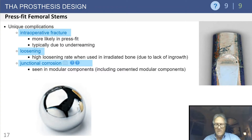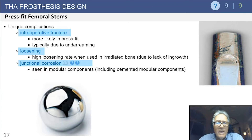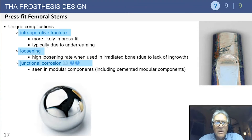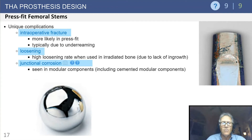Unique complications of press-fit femoral stems include intraoperative fracture — you have to be a good carpenter, looking carefully at the femoral canal. Our rule was: if you're driving the stem and it stops, you stop. If you continue hitting and the stem moves, you've probably broken the femur or created a crack. Other complications include early loosening due to lack of ingrowth — an early, not late, finding. And importantly, junctional corrosion seen in modular components at the Morse taper — an increasingly important concept in arthroplasty.